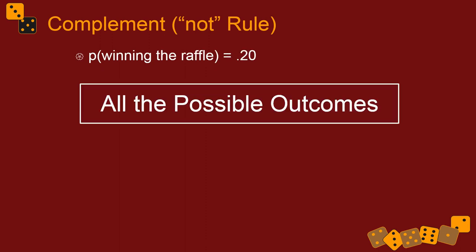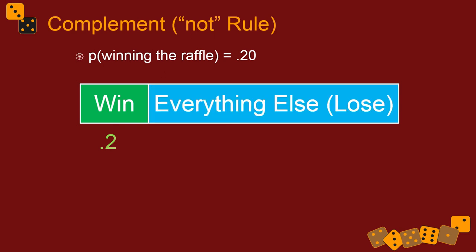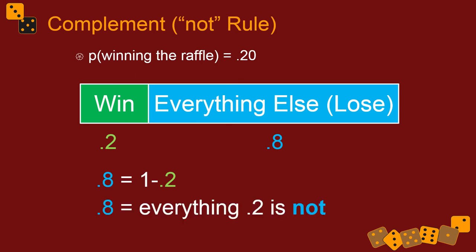The probability of winning a raffle where only five people bought tickets is 0.2 — you're one of five people, a 20% chance, really good odds for a raffle. We can use a bar chart to show probabilities. The probability of you winning is one fifth, 0.2. The probability of you not winning — losing — would be 0.8. So 0.2 and 0.8 equal one, which is all the possibilities.